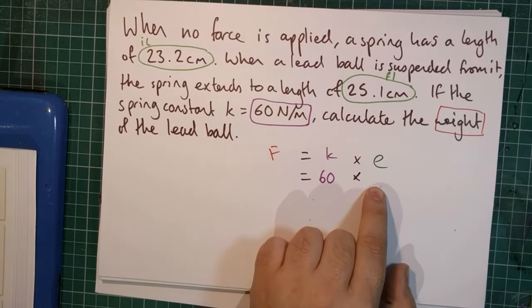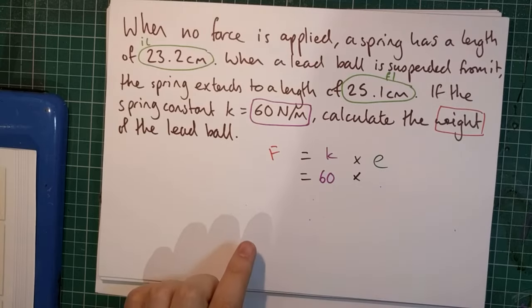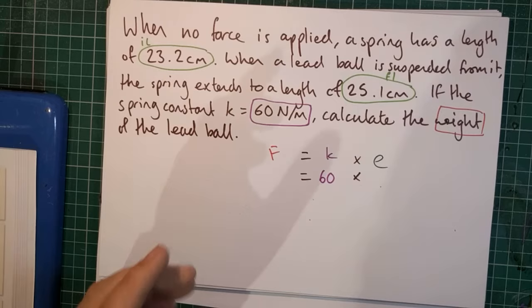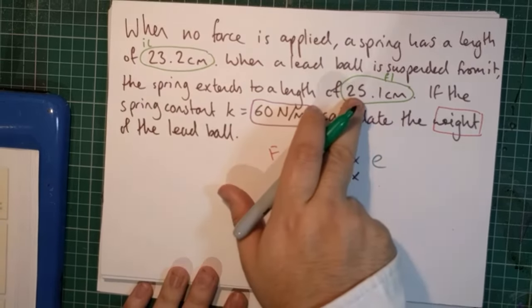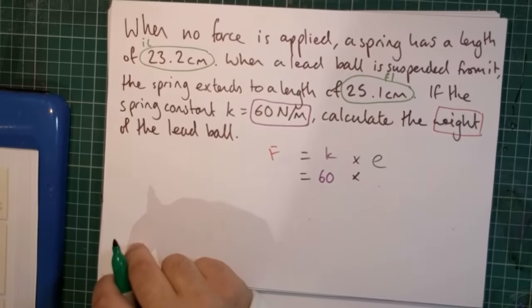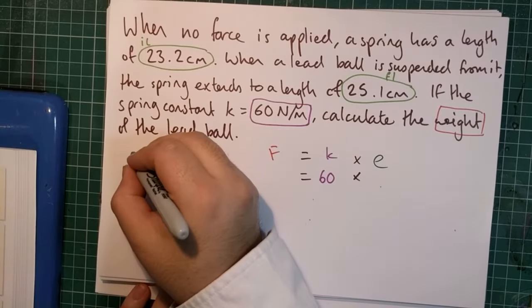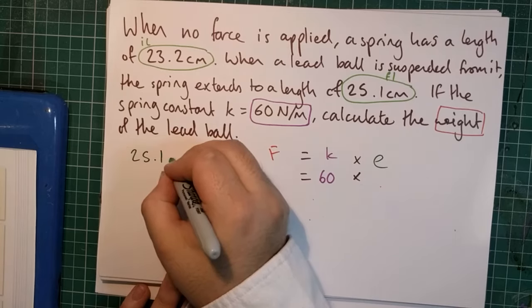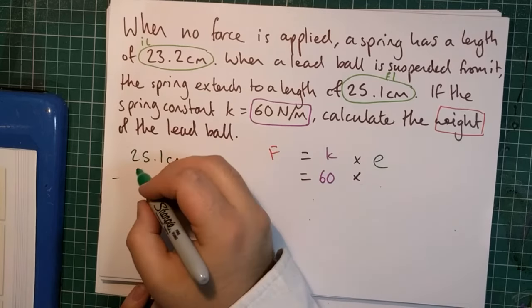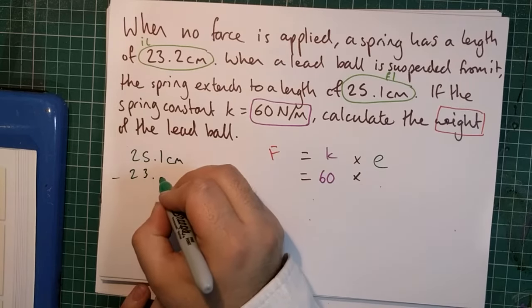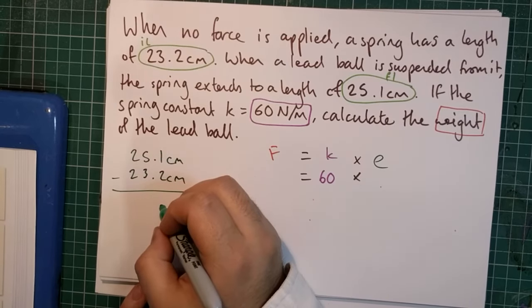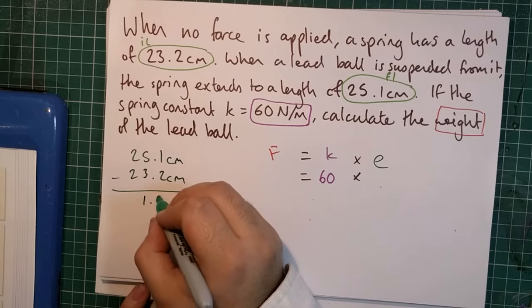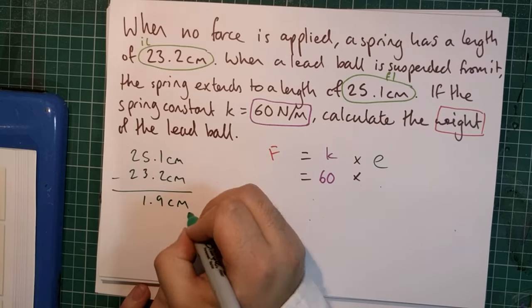And we don't know what the extension is yet, although we've been given enough information to tell. So, the extension is how much longer it gets. So, if I take the final length and then minus the initial length, that will give us our answer. So, let's go 25.1 centimeters minus 23.2 centimeters. And that's going to give us 1.9 centimeters.